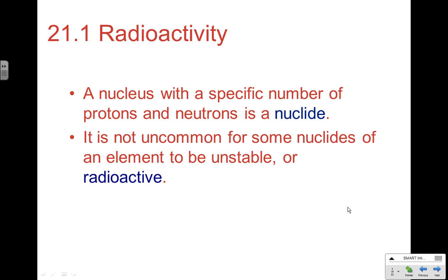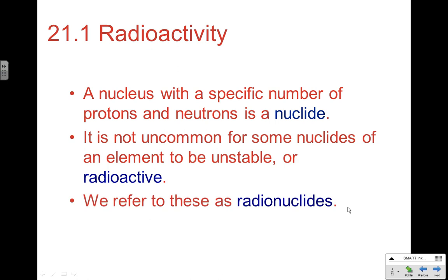Section 21.1 gets into radioactivity — when we have an unstable nucleus spontaneously breaking apart to become more stable and releasing ionizing radiation. Radioactive decay is a dangerous type of radiation. Light is a form of radiation, but radioactivity specifically refers to ionizing radiation. A nucleus with a specific number of protons and neutrons is known as a nuclide. It's not uncommon for some nuclides to be unstable or radioactive, and those nuclei will undergo nuclear reactions to achieve stability and release radiation. We refer to these radioactive nuclides as radionuclides.